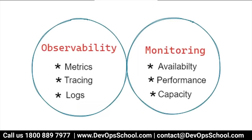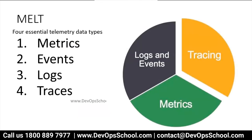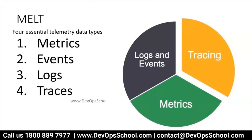How do you set up observability? You collect metrics, events, logs, and traces — called MELT, the Four Essential Telemetry Data Types. Tele means remote, metry means measure — so collect metrics from remote locations. M is for metrics: Linux metrics, Windows metrics, CPU, RAM, hard disk, network, Apache metrics, Tomcat metrics, database metrics, Docker metrics, Kubernetes metrics. E is for events — events are not continuously captured like metrics. Events include login, logout, making a payment, deleting something, adding something. L is for logs from Linux, Windows, applications, and networks.